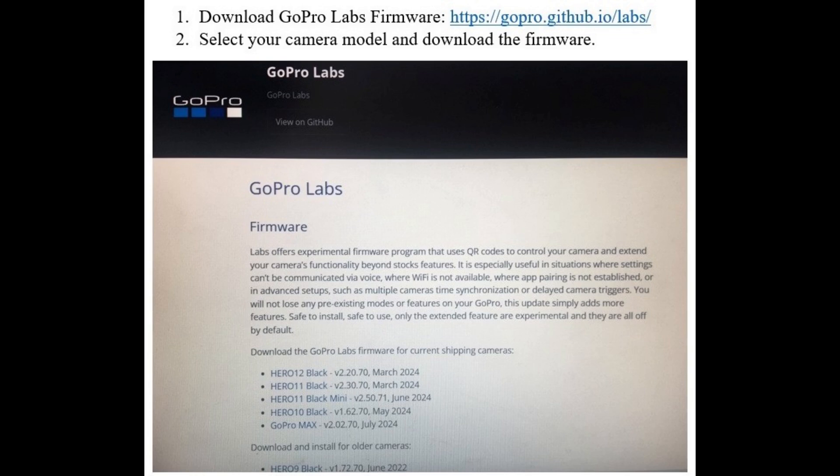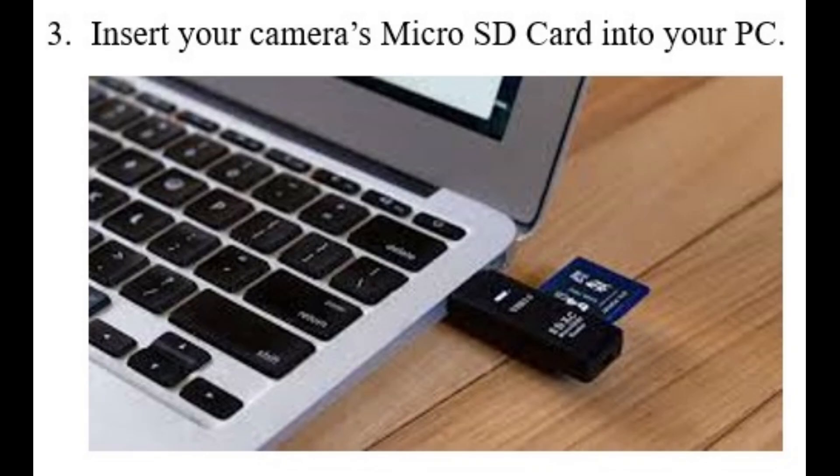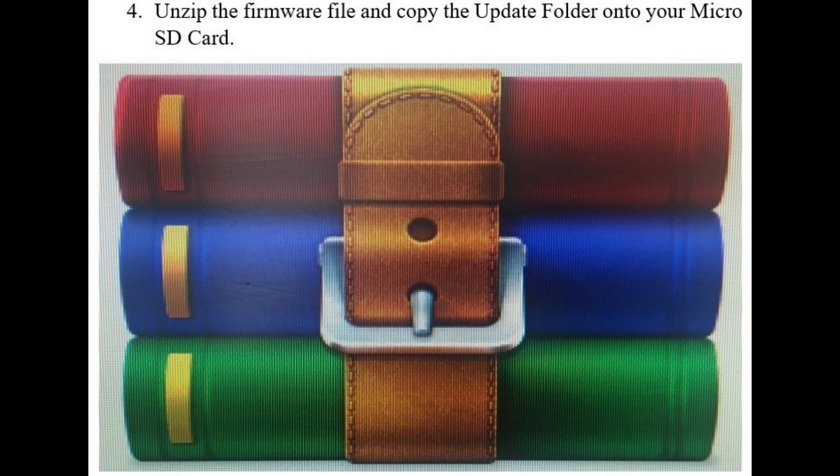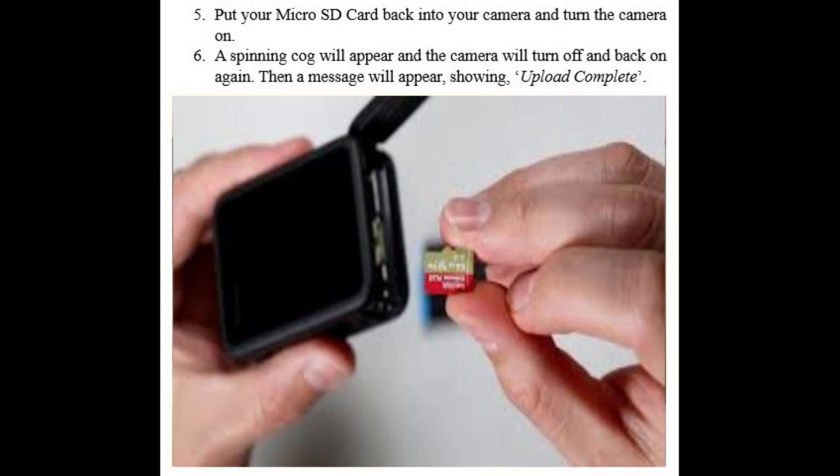Now we'll begin. Download GoPro Labs firmware from the following website. Select your camera model and download the firmware. Insert your camera's micro SD card into your PC, unzip the firmware file, and copy the update folder onto your micro SD card.